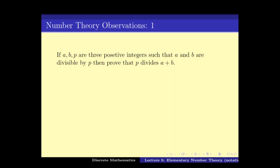In this video I have made a few observations. These are pretty standard observations in number theory, but for completeness I have written them down explicitly and we will be going over them one by one. Here is the first one: if a, b, and p are three positive integers such that p divides both a and b — that means p divides a and p divides b — then we can show that p divides a plus b.